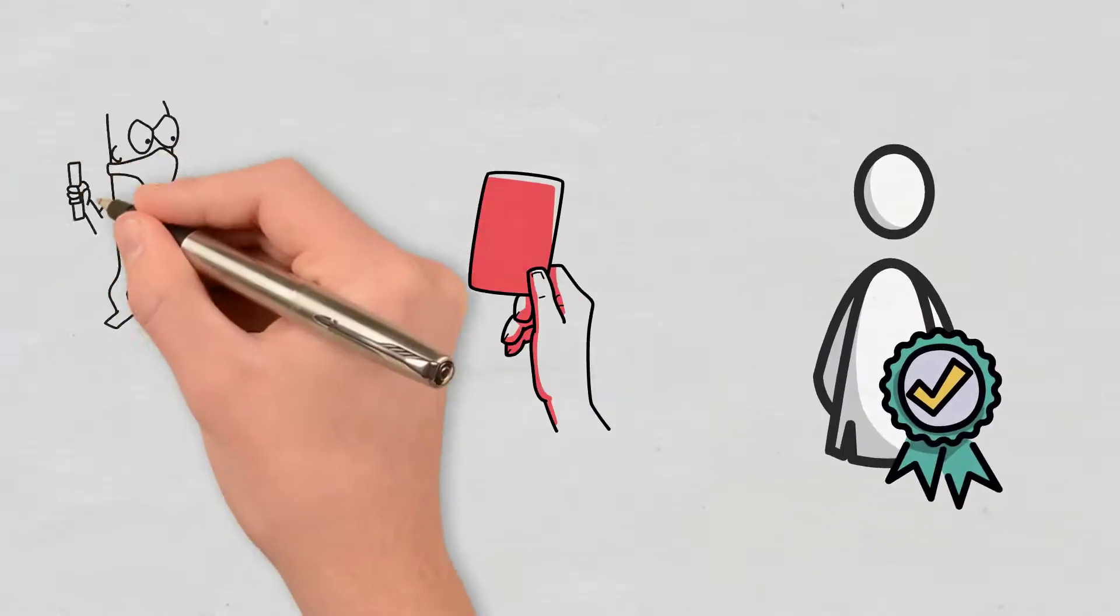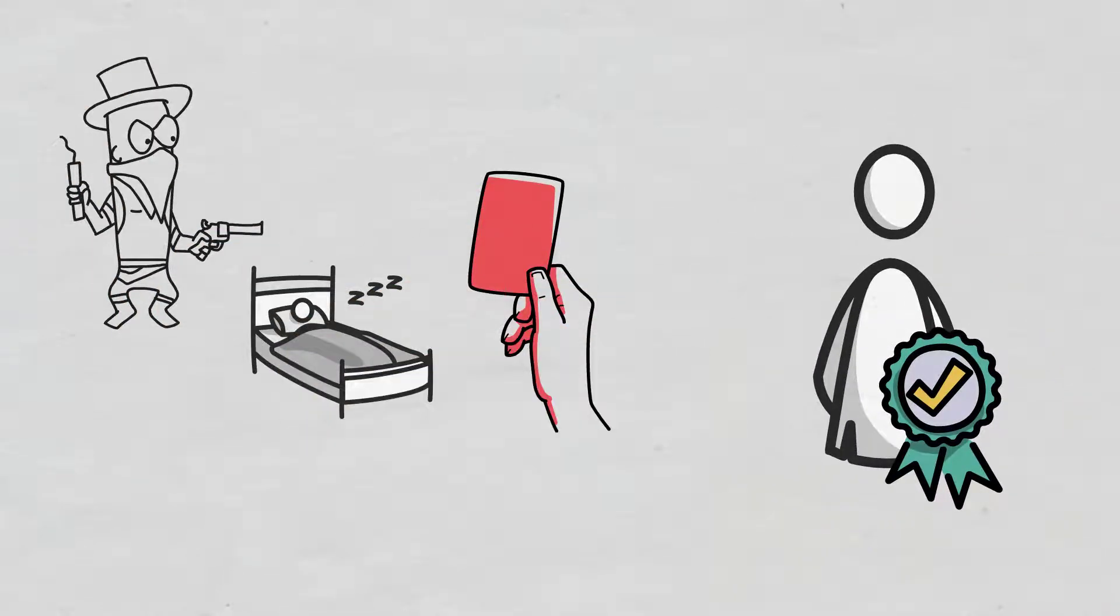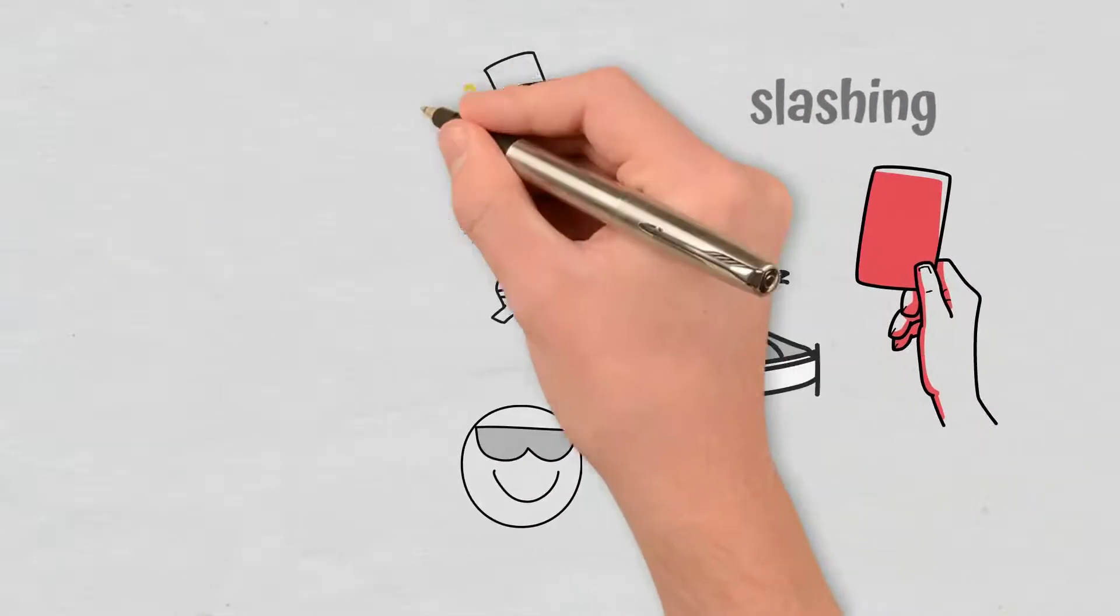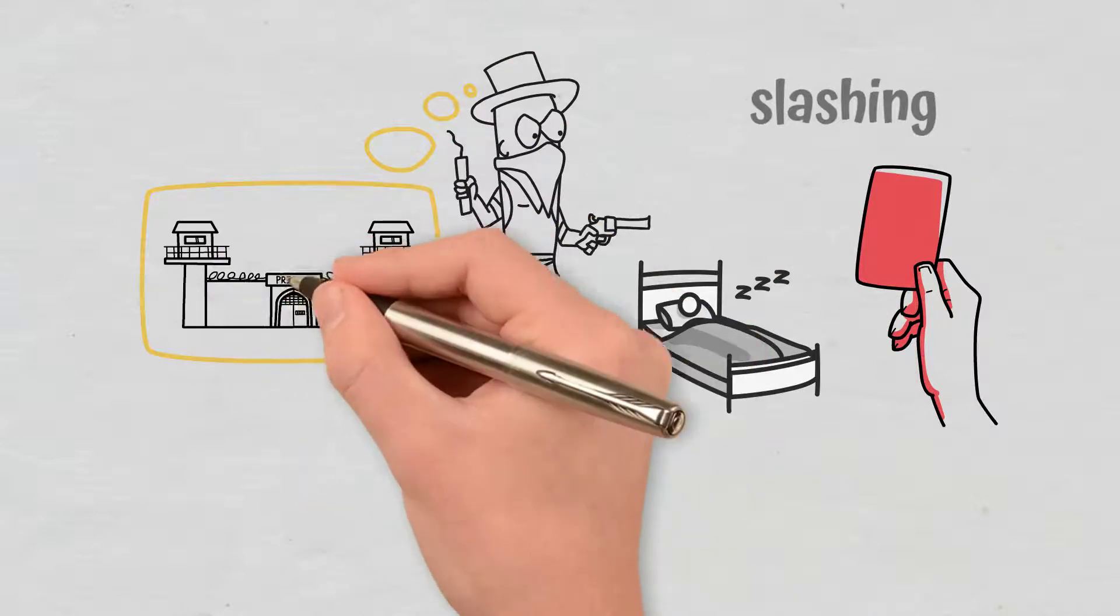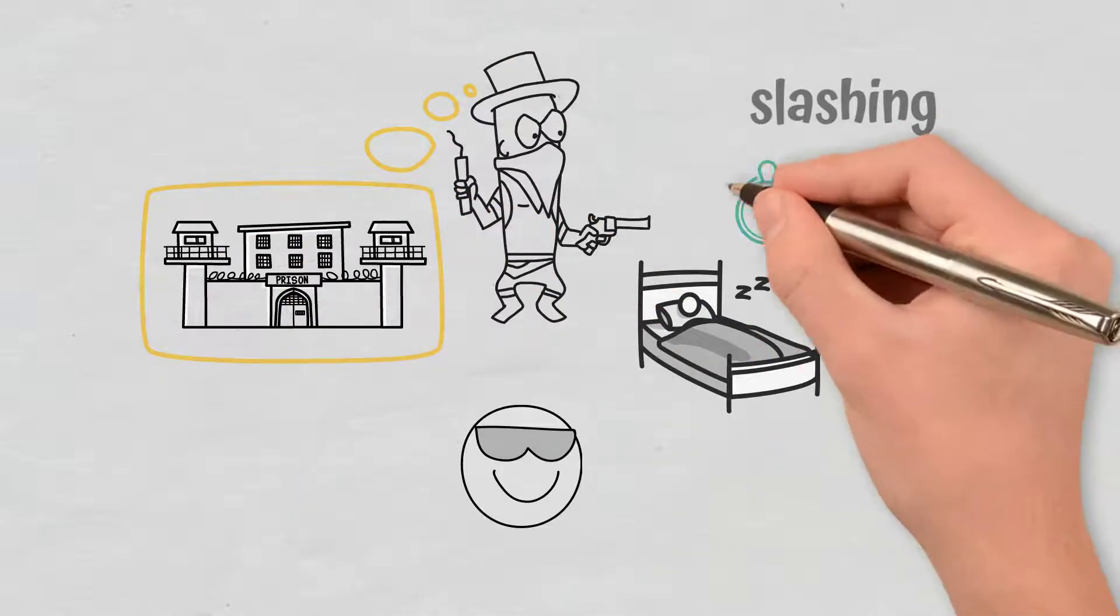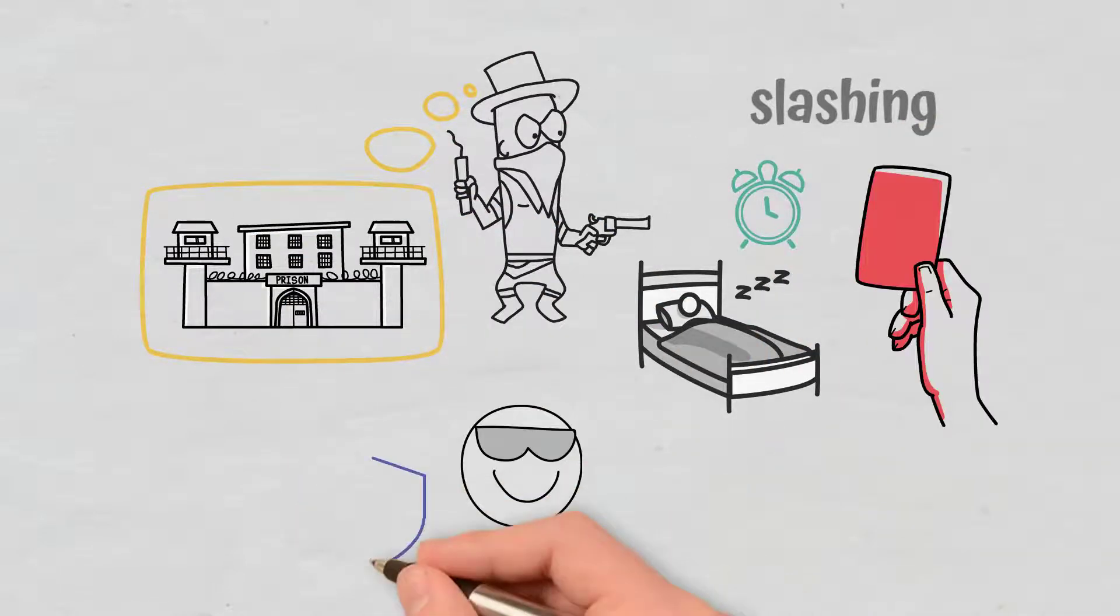On the flip side, bad behaviors, inactivity, and dishonest validations are subject to a penalty called slashing. This mechanism is designed to discourage malicious validator behavior and to incentivize network participation as well as node security and availability.